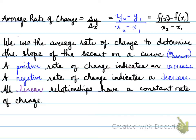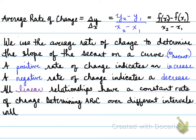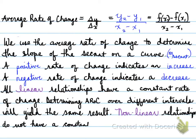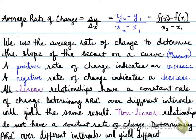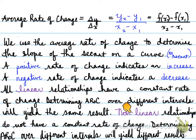All linear relationships have a constant rate of change. Determining the average rate of change - AROC - over different intervals will yield the same result. Non-linear relationships do not have a constant rate of change; determining the AROC over different intervals will yield different results. A line has a constant rate of change because it has the same slope anywhere across that line. A non-linear relationship does not have a constant rate of change because it's a curve, and the curve changes as you change the secant line.